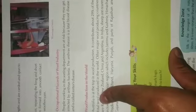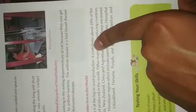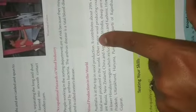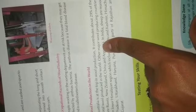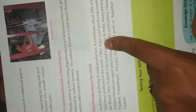Australia is at the top in wool production, contributing about 29% of the total wool produced in the world. Other major wool producing countries are Russia, New Zealand, China, and Argentina. In India, sheep are reared in the lower Himalayan region, including Jammu and Kashmir, Himachal Pradesh, Uttar Pradesh, Uttarakhand, Haryana, Punjab, parts of Rajasthan, and Gujarat.